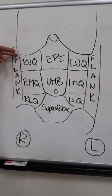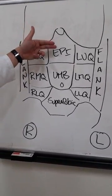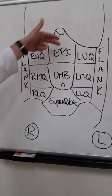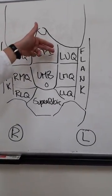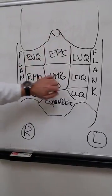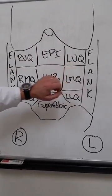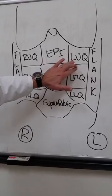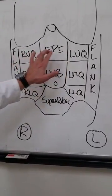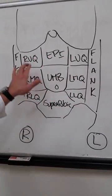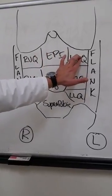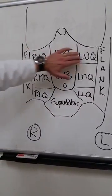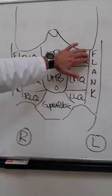Within the right upper quadrant of the abdomen are portions of the stomach, liver, and gallbladder. The epigastric region contains portions of the pancreas and stomach. The left upper quadrant has the spleen, and the right upper quadrant, epigastric, and left upper quadrant all share the transverse colon with the hepatic flexure and the splenic flexure of the colon.